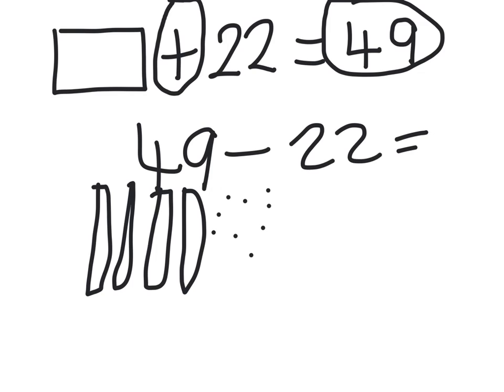Now I'm going to cross out 22: 10, 20, 21, 22.